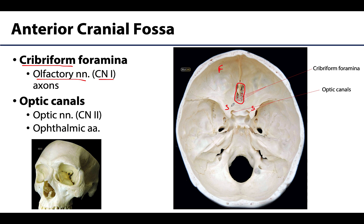There are also optic canals, one on each side, which lead into or away from the orbital region. The ophthalmic artery, a branch of the internal carotid artery, enters the orbital region via this canal, and the optic nerve exits the orbital region via this canal. Note that in some resources the optic canals are considered part of the middle cranial fossa, but here we follow Gray's Anatomy.